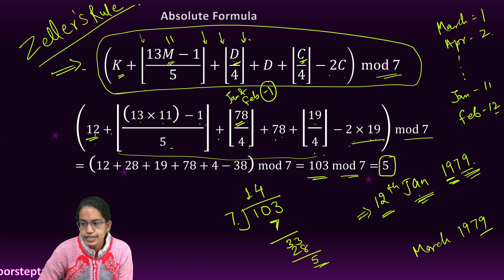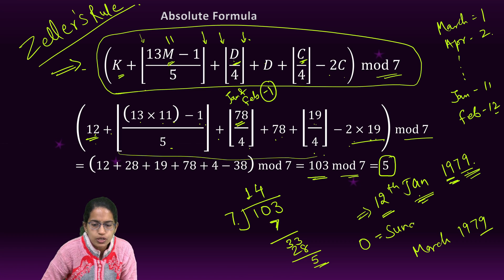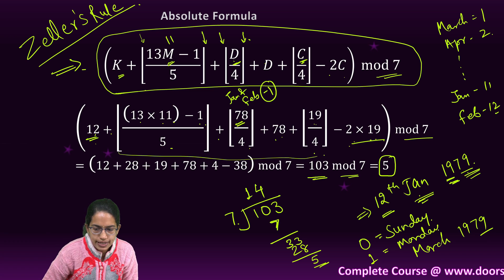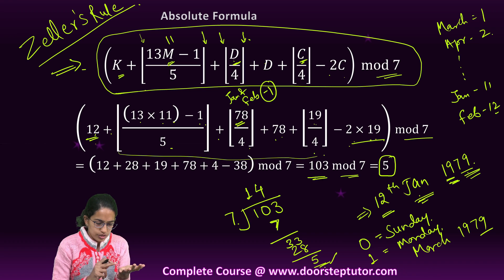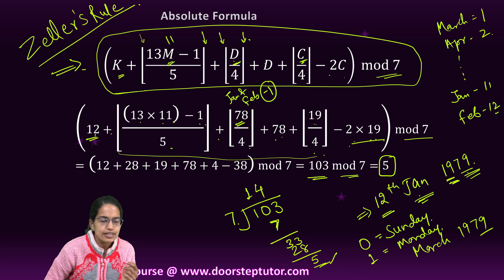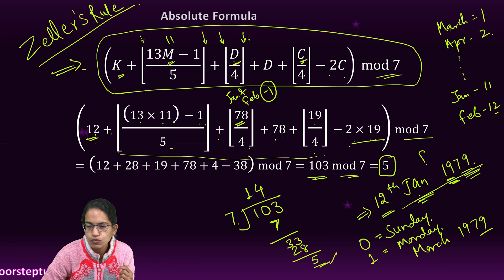So I have 5 as the remainder. Now what to do with this 5? How would I know what day it is? Remember, if it is 0, we call this as Sunday. If it is 1, we call this as Monday. So if this is 5, what would it be? Tuesday, Wednesday, Thursday, Friday. So 12th January 1979 was what day? It was Friday.